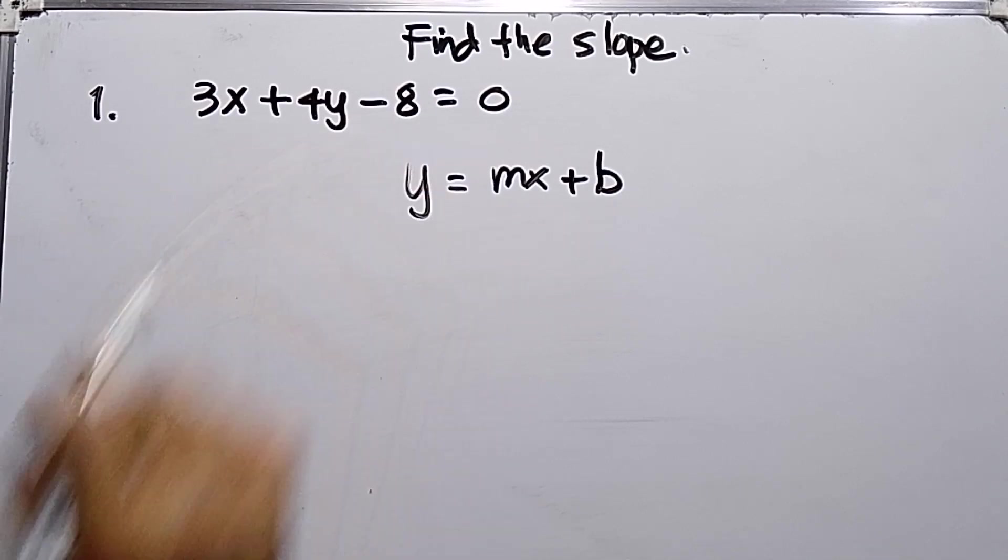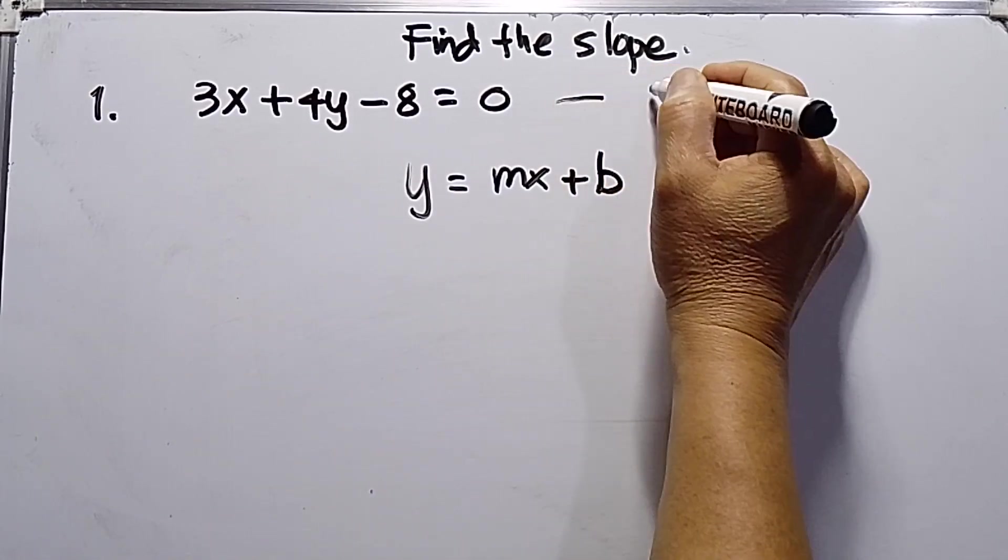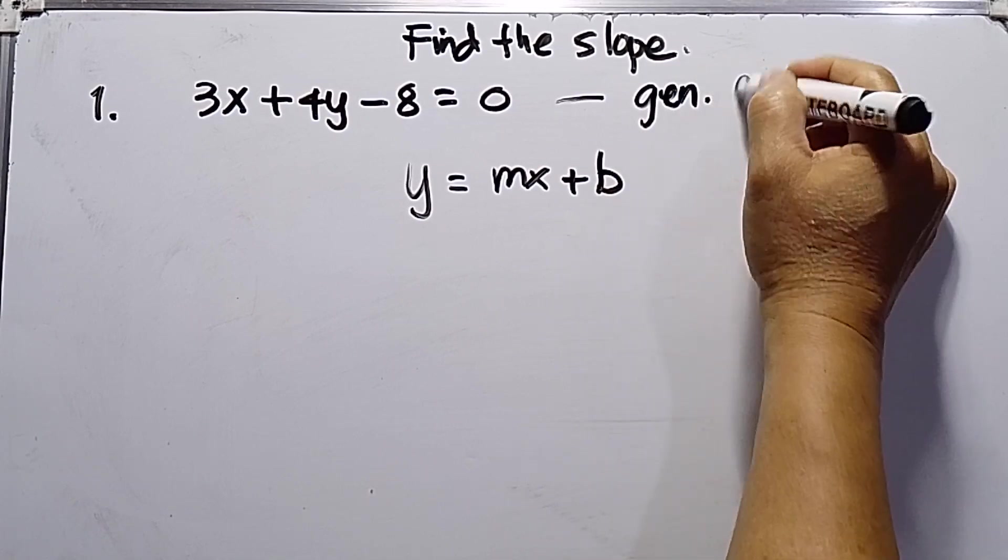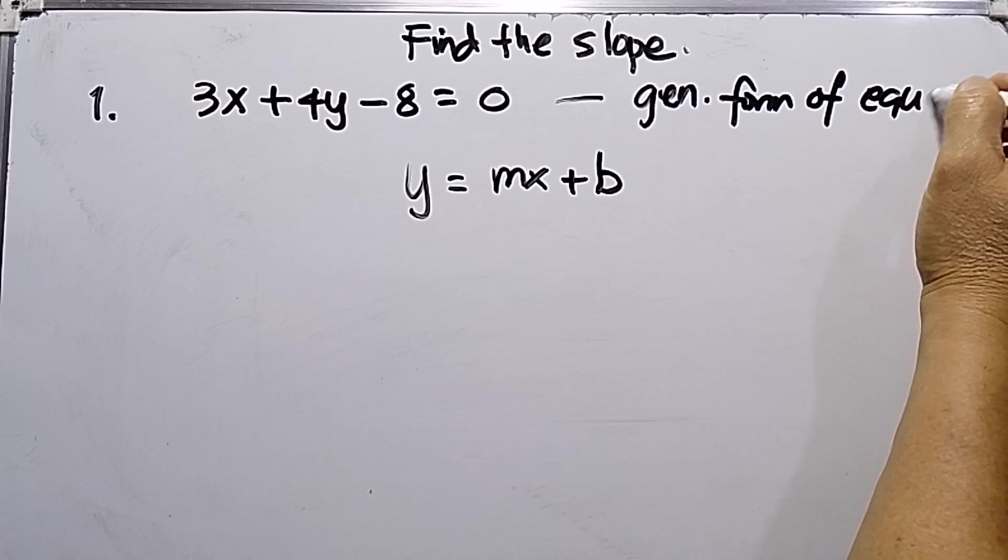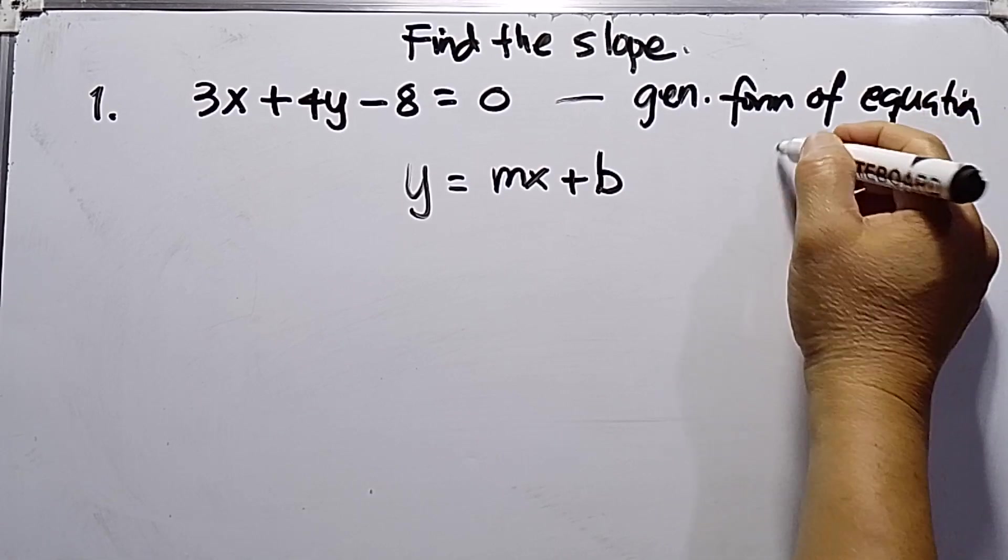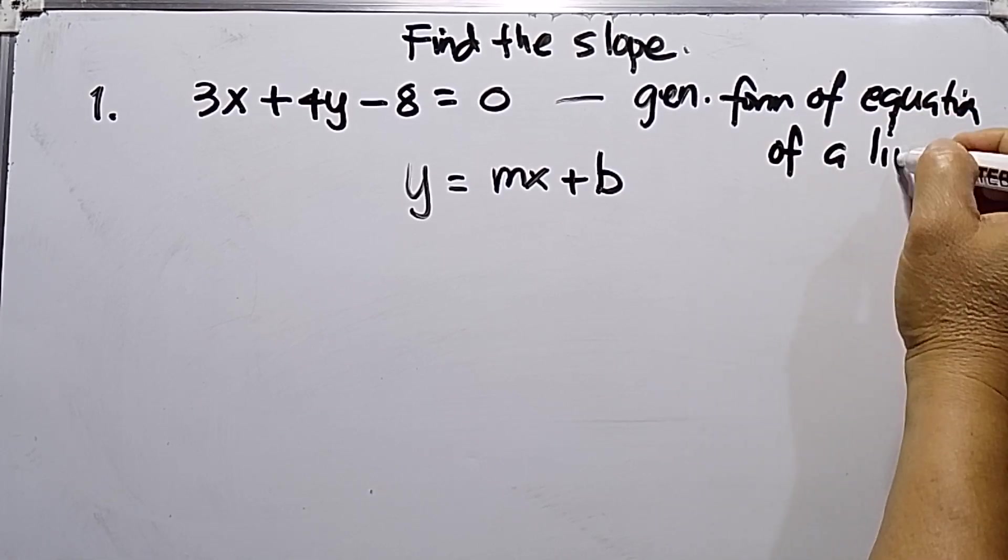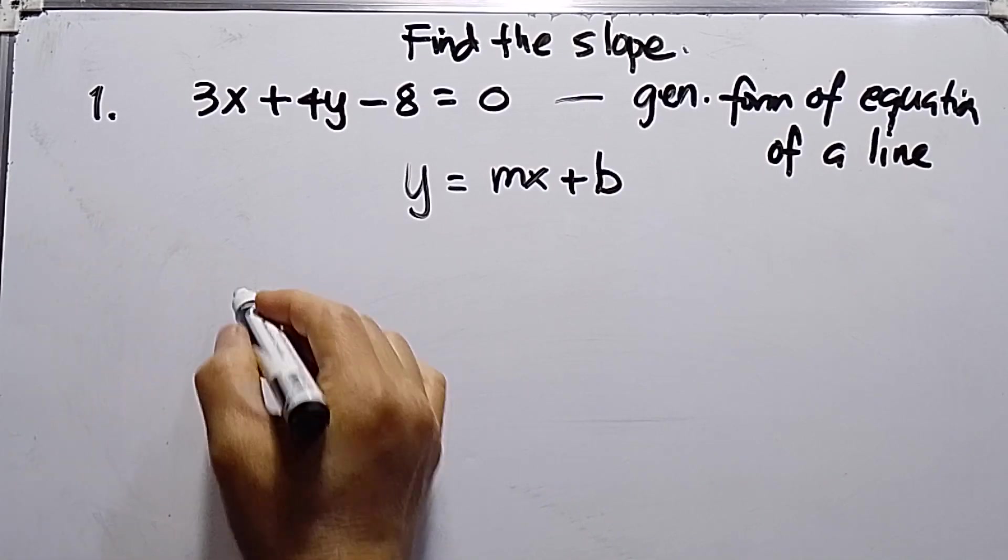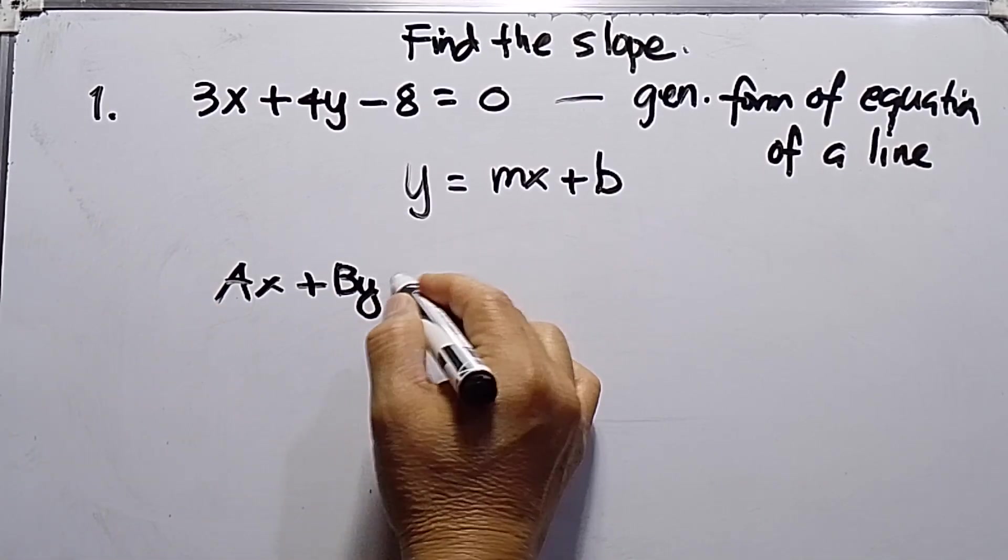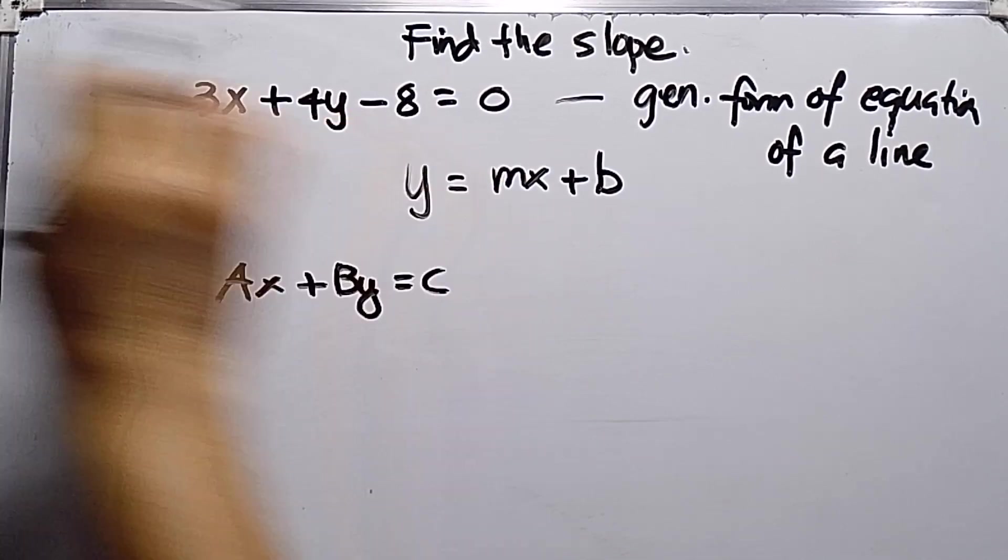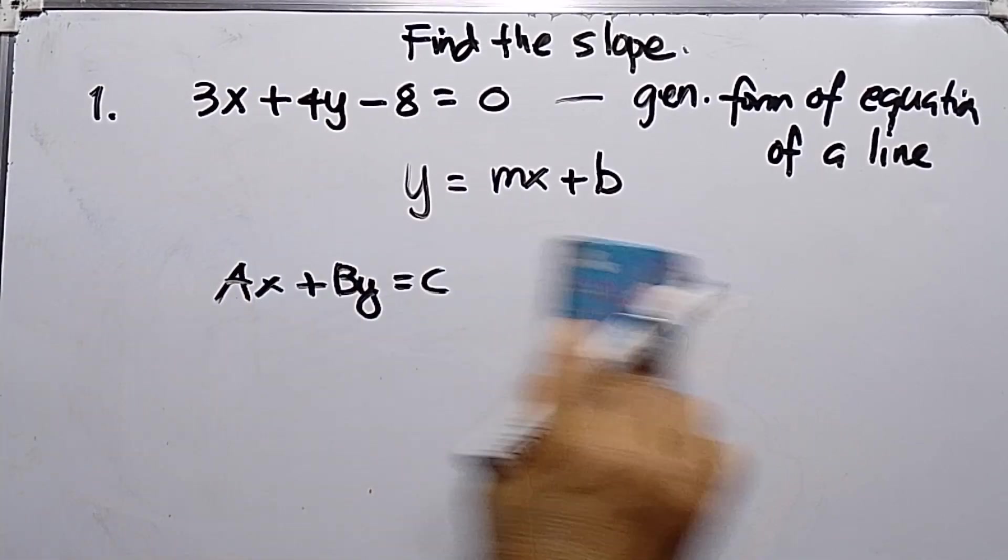Take note, this is the general form of an equation of a line. The standard form will be Ax plus By equals C, so we need to transform this to standard form of a line.